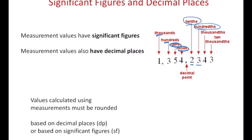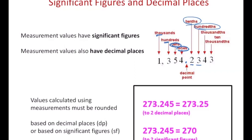Values that are calculated using measurements have to be rounded, and this is going to be based on the decimal places or the sig figs in the original measured values. For instance, if you have this raw number from a calculator — 273.245 — and we want to round to two decimal places, the decimal places are the places after the decimal, which would be the two and the four. So we're going to keep the two decimal places represented by the two and the four. You need to look at the digit right after the last place you're keeping, and that's a five. If it's five or greater, you round up the previous digit — so 273.24 rounds up to 273.25.